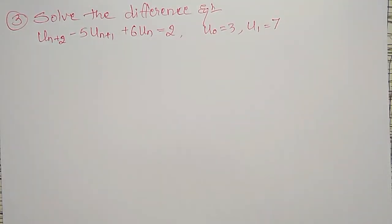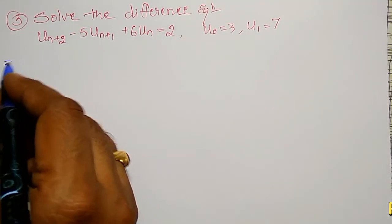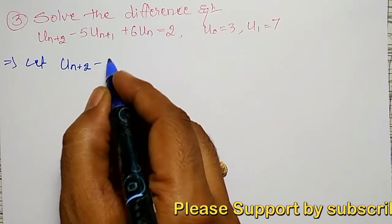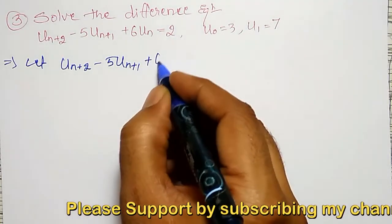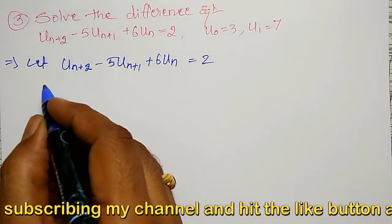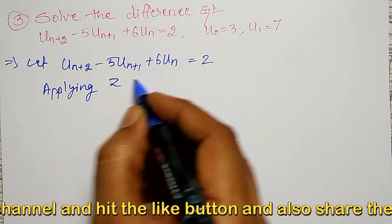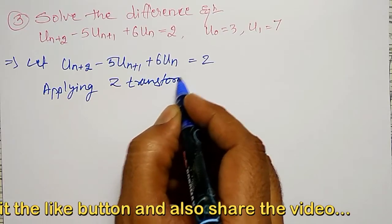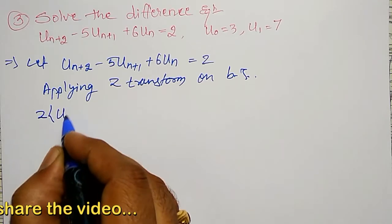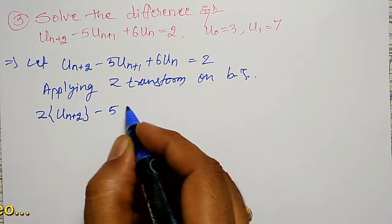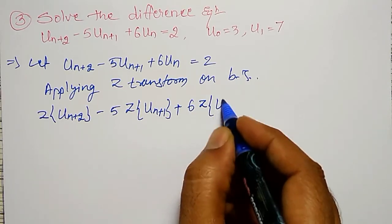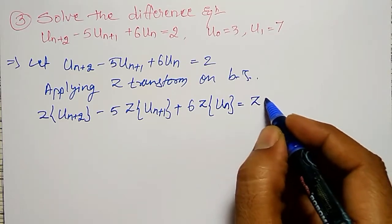To solve and find u(n), let me consider u(n+2) minus 5u(n+1) plus 6u(n) equal to 2. Applying Z-transform on both sides, I get: Z-transform of u(n+2) minus 5 times Z-transform of u(n+1) plus 6 times Z-transform of u(n) equal to Z-transform of 2.